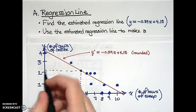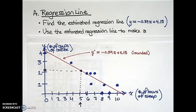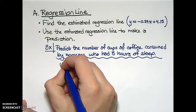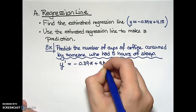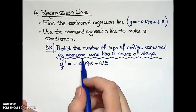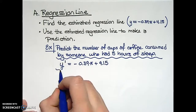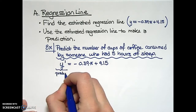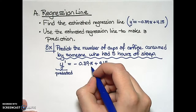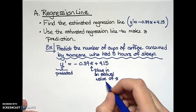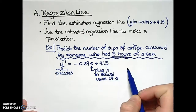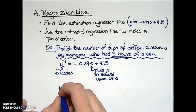Tracing to our vertical axis, it looks as if they will have consumed slightly more than two cups of coffee. Let's verify it using our estimated regression line: y-prime equals negative 0.39x plus 4.15. Note that I'm using y-prime notation for a predicted value of y, but we don't use x-prime because we're plugging in an actual value for x — specifically, we're going to plug in five for the actual number of hours of sleep.